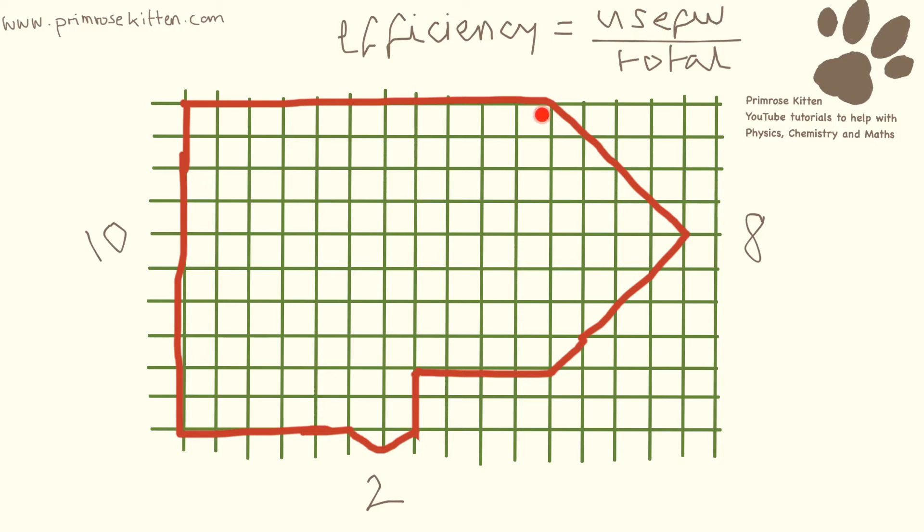And you'll notice I counted the width of the arrow, not the number of squares in the arrow, just the width. Now to work out the efficiency, all I need to do is 8 over 10, which equals 0.8.